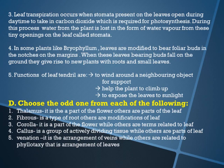Next, choose the odd one out. Thalamus is the odd one out from: petiole, thalamus, leaf plate, lamina, and vein layers — thalamus is a part of the flower. Fibrous is the type of root, whereas others are modifications of the leaf. Corolla is a part of the flower, while others are terms related to the leaf. Callus is a group of actively dividing tissue, whereas others are parts of the leaf. Venation is the arrangement of veins, while others are related to phyllotaxy.